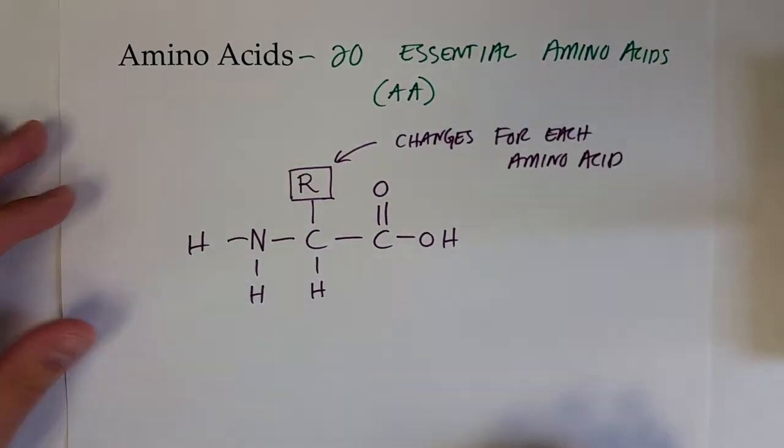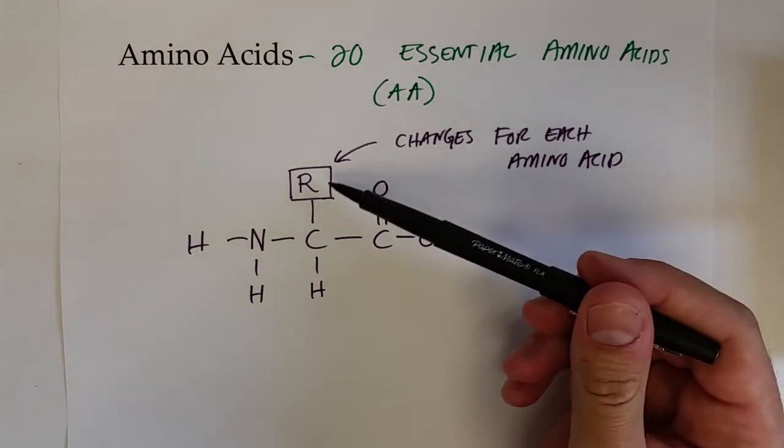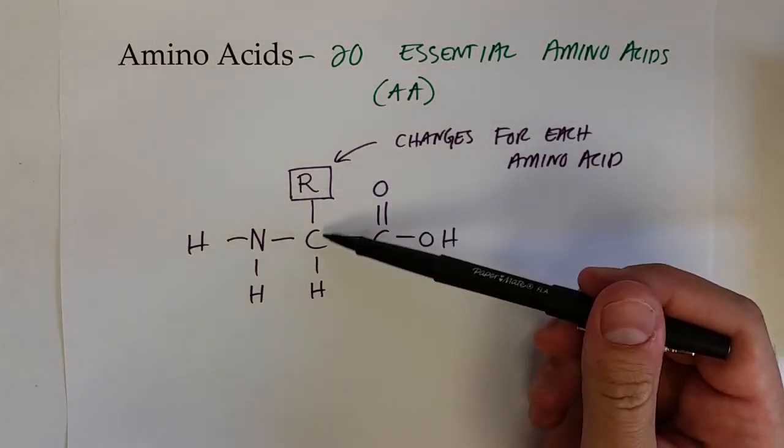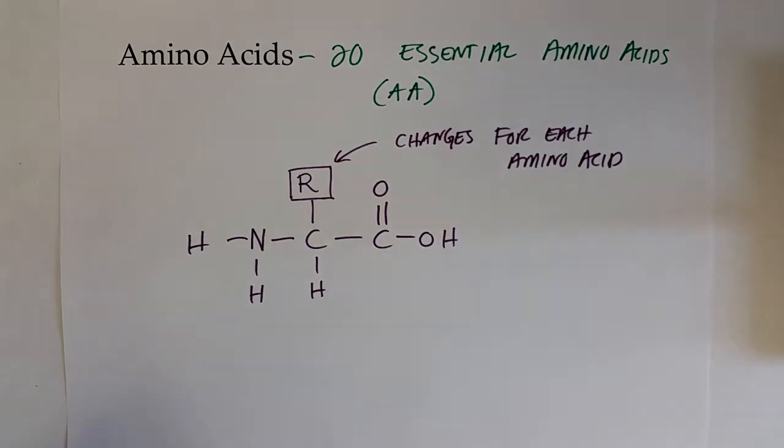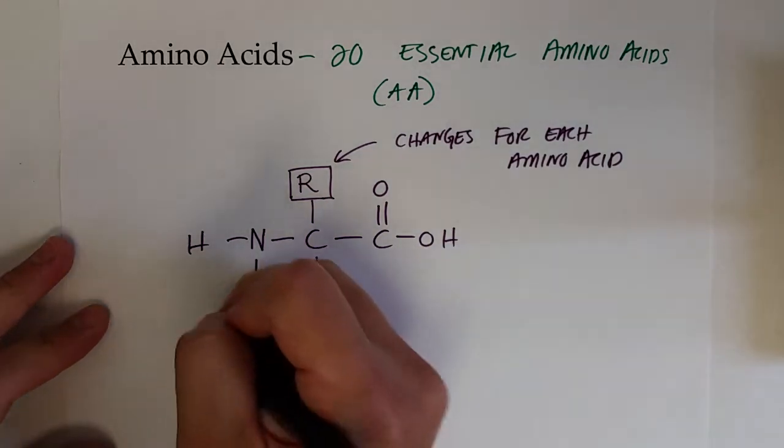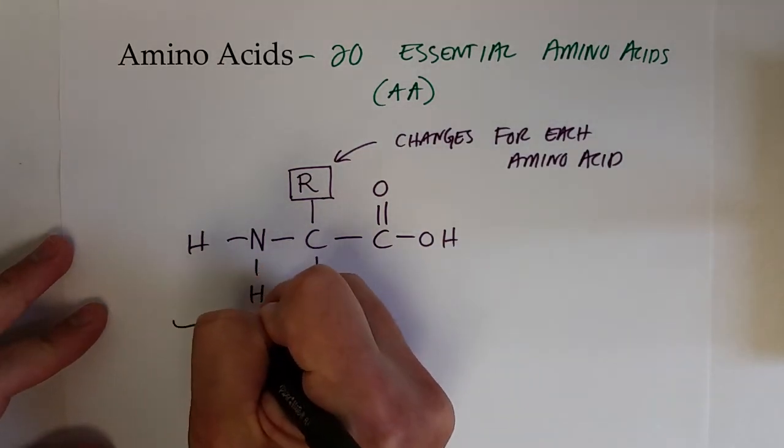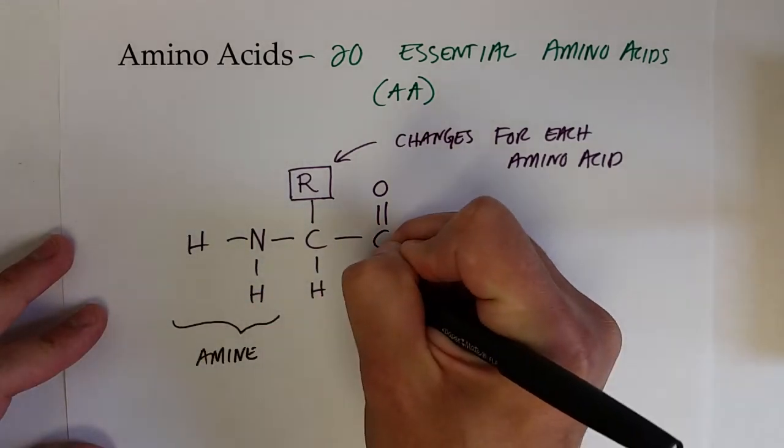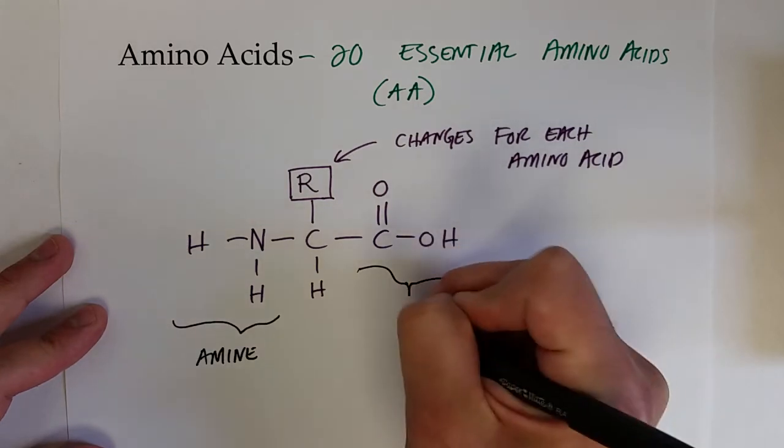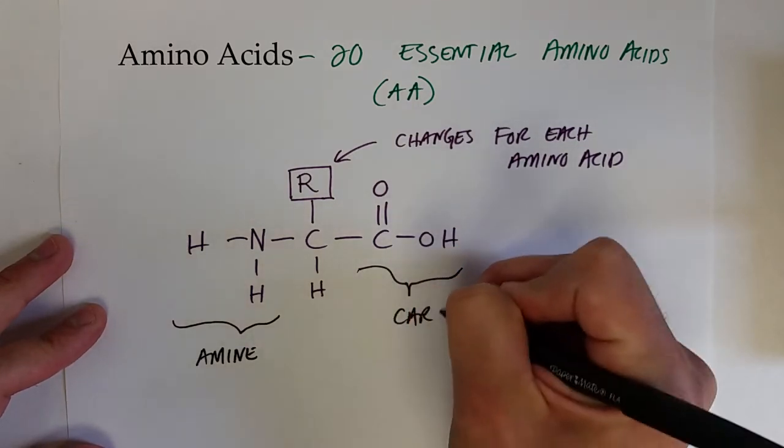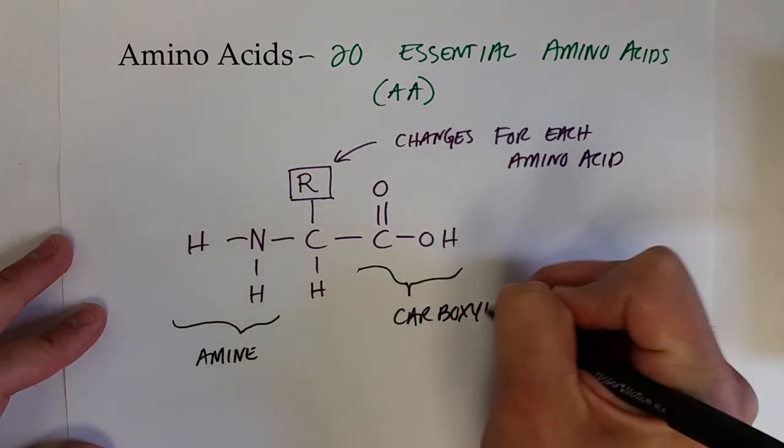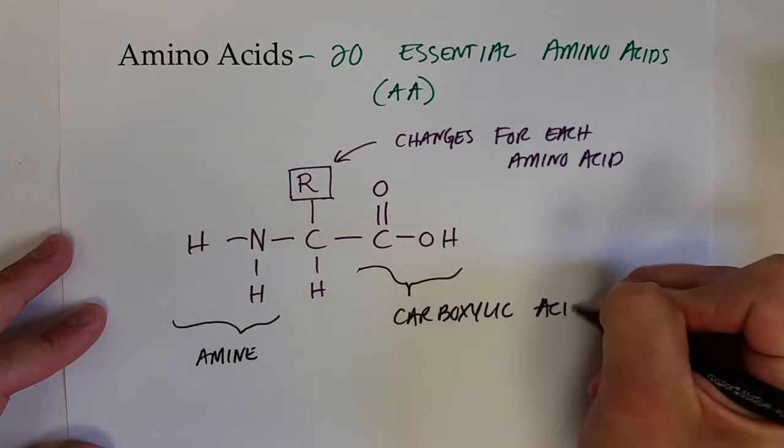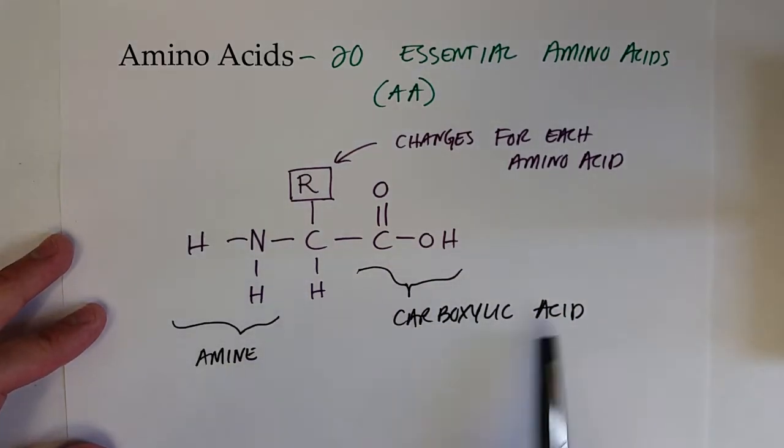So we'll look at a few, but each of the 20 essential amino acids has a different atom or sets of atoms bonded to the central carbon in what we call the R group. You can see why we get the name amino acid from. All of these molecules have an amine group and a carboxylic acid group.